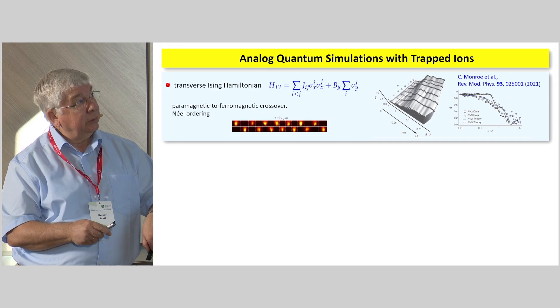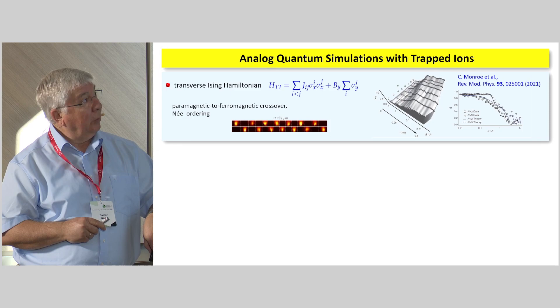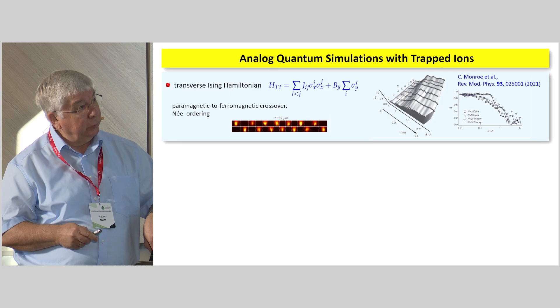On the analog simulation, this is an Ising model that you have. The group of Chris Monroe already has shown a long time ago that you can start, see the crossover from paramagnetic to ferromagnetic crossover. This is a phase transition right here, so you see Néel ordering and things like that. There's a nice review, recent by Chris Monroe's group, where he covers most of these simulations.